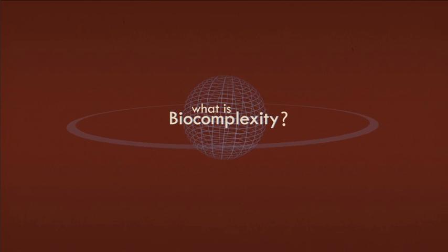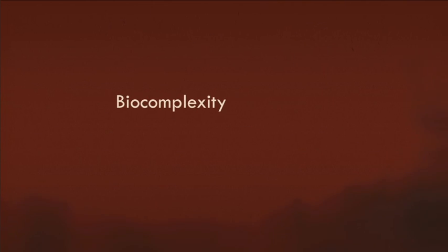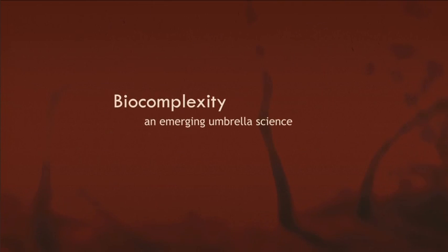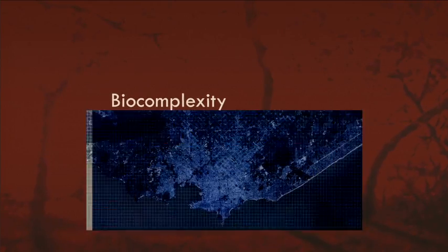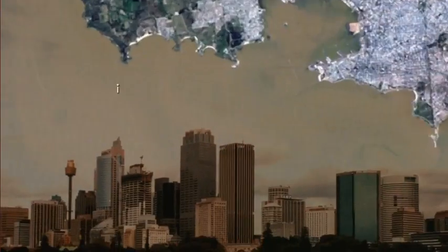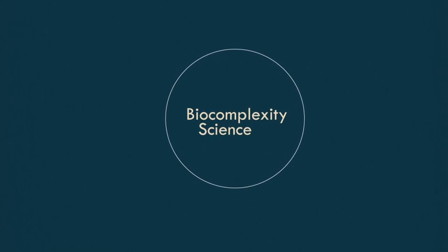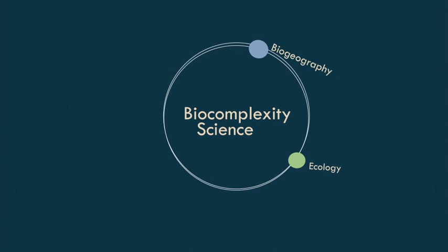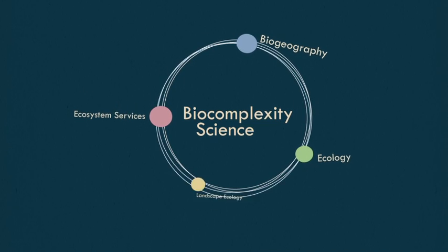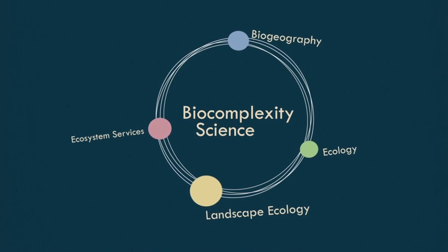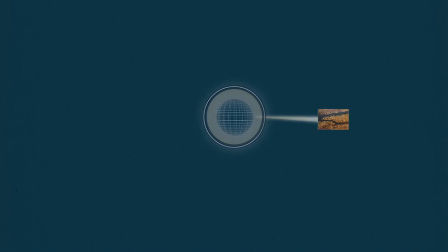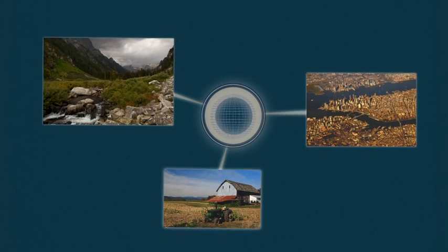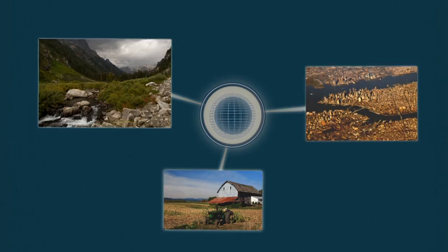What is biocomplexity? Biocomplexity is an emerging umbrella science that helps us understand how humans are a part of nature, intimately linked to our habitats. The science of biocomplexity integrates core concepts of ecology, biogeography, ecosystem services, and landscape ecology, and uses a range of science tools and ideas to understand the consequences of the choices that we humans make about the land, water, and biological communities that we inhabit.